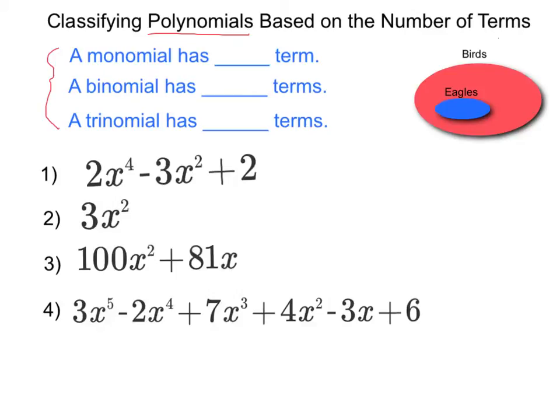The prefix mono means one. Like when somebody wears a monocle, they're wearing one eyeglass. When somebody is riding on a monorail, they're riding on a vehicle that rides on one rail. So every monomial has just one term.